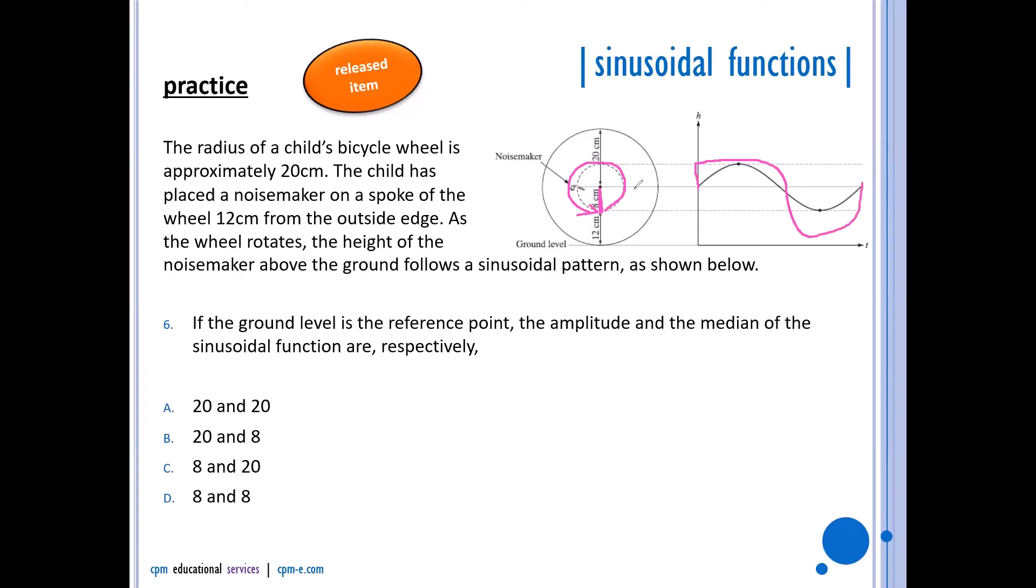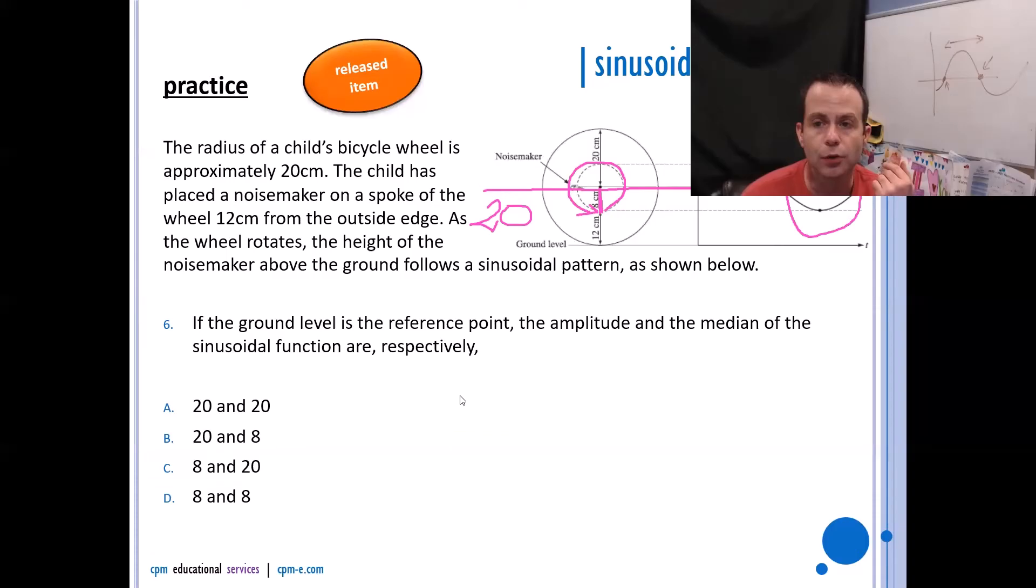And what's happening is it's going up 8 and then down 8 and then down 8 and then up 8. So this guy here would be my median, and the median would be 20. And then my amplitude is the radius of the noisemaker. So the noisemaker is 8 radius. So I have an amplitude of 8 and a median of 20.